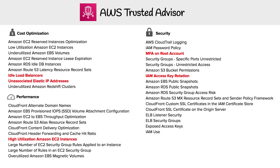Trusted Advisor has five different categories where it can advise you, and it has checks. These are all the checks possible at the paid tiers. For the free tier there are quite a few less. We're going to focus on the full list, going through each category. First, looking at cost optimization — where you're going to be able to save money — the two most common recommendations are idle load balancers and unassociated EIPs.